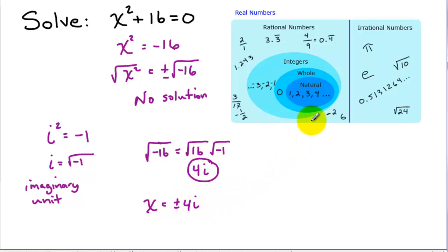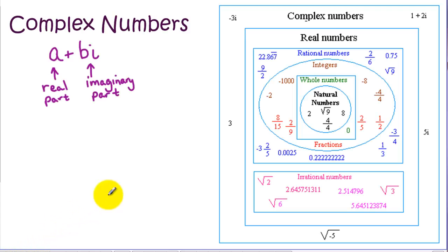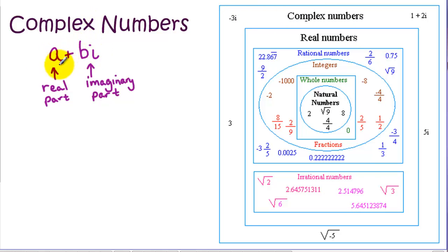Once we invented this one single new number, a whole classification of numbers was created — the complex numbers. We've got our real numbers, and then we have complex numbers. Each complex number has two parts: a real part and an imaginary part.